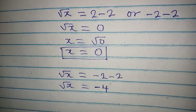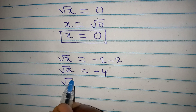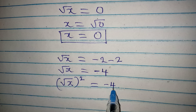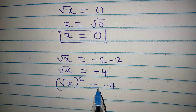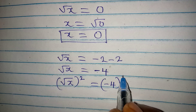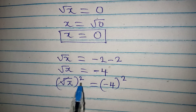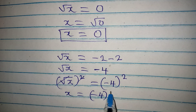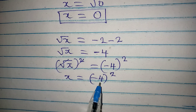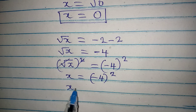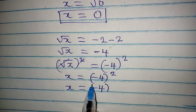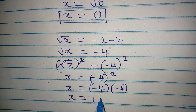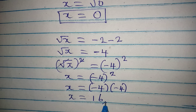Since minus 2 minus 2 is minus 4, we square both sides. Squaring the square root of x gives x, and squaring minus 4 — making sure to write it in brackets — gives minus 4 times minus 4, which equals positive 16. So the second value of x is 16.